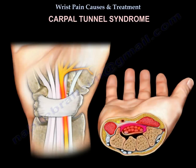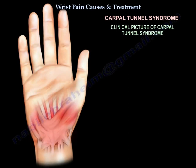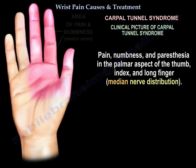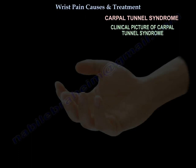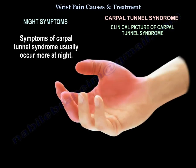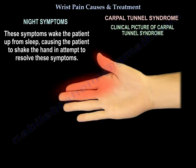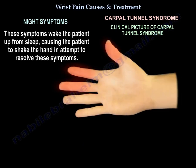Let's talk about carpal tunnel syndrome. What is the clinical picture of carpal tunnel syndrome? There is pain, numbness, and paresthesia in the palmar aspect of the thumb, index, and long finger — this is the area of median nerve distribution. Patients will have night symptoms; symptoms of carpal tunnel syndrome usually occur more at night and wake the patient from sleep, causing them to shake the hand to resolve the symptoms.